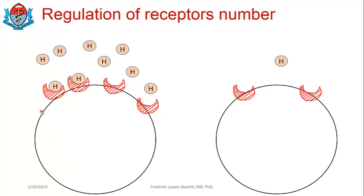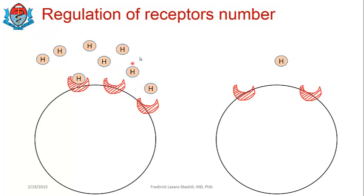When a hormone binds to a receptor it forms a hormone-receptor complex, and this gets into the cell and eventually gets dissolved by lysosomes — it gets used up. What happens is the number of receptors decreases. As hormones bind to receptors, the hormone-receptor complex is internalized by endocytosis, getting inside the cell, and the lysosomes destroy these receptors — after the action has already been started and the message has already been taken.